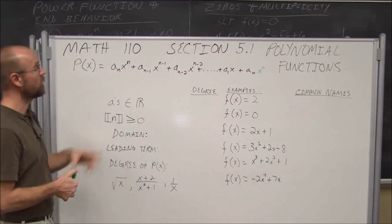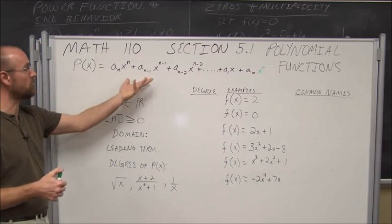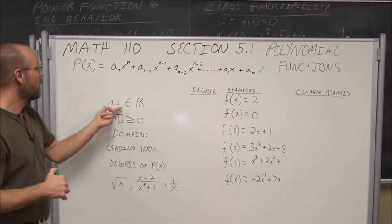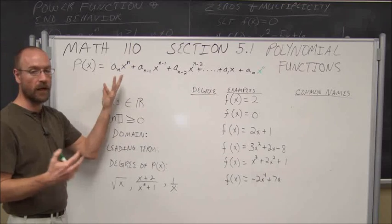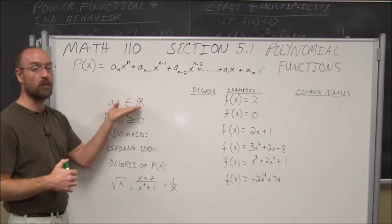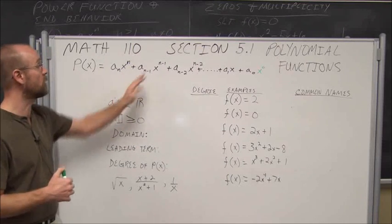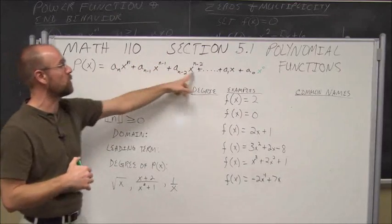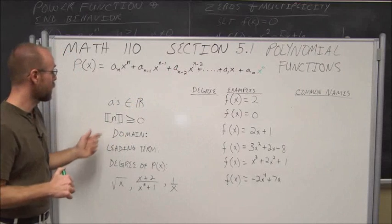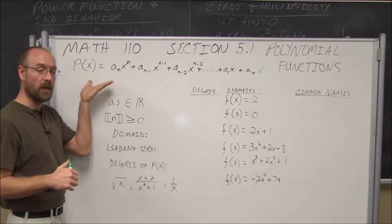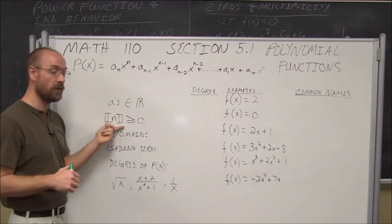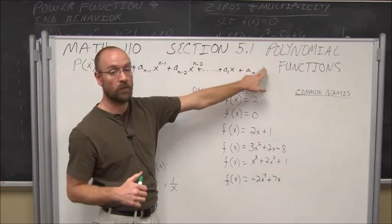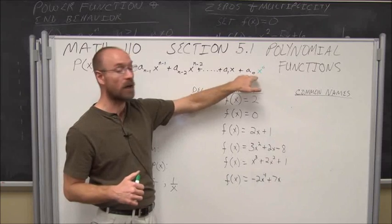So let's assess our polynomial function in general form. This is generic, where the n's represent some number. Our coefficients — the a's — have to be some real value, and they can be 0, which just means that degree term wouldn't exist. And n, in order to be a polynomial, must be an integer greater than or equal to 0.